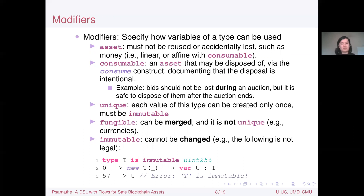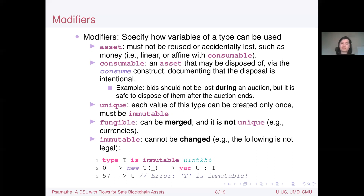Fungible represents values that can be merged and are not unique — essentially all currencies like dollars, euros, bitcoin, ether — where only the amount matters, not which specific pieces you have. If you have $2 and $2, you have $4 without losing information. Immutable values cannot be changed. For example, declaring a type t as immutable and then trying to flow 57 into a variable of that type is not legal.